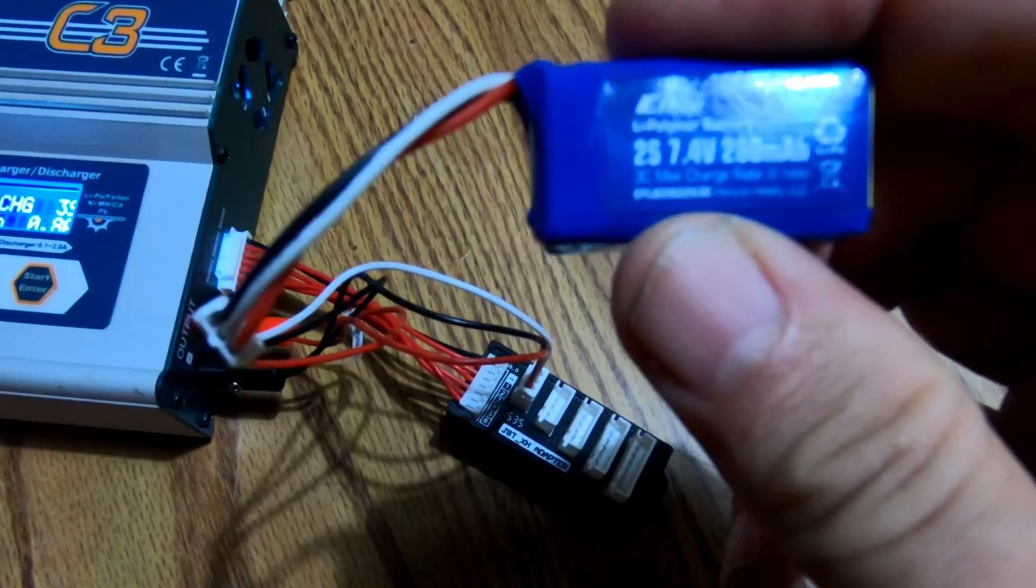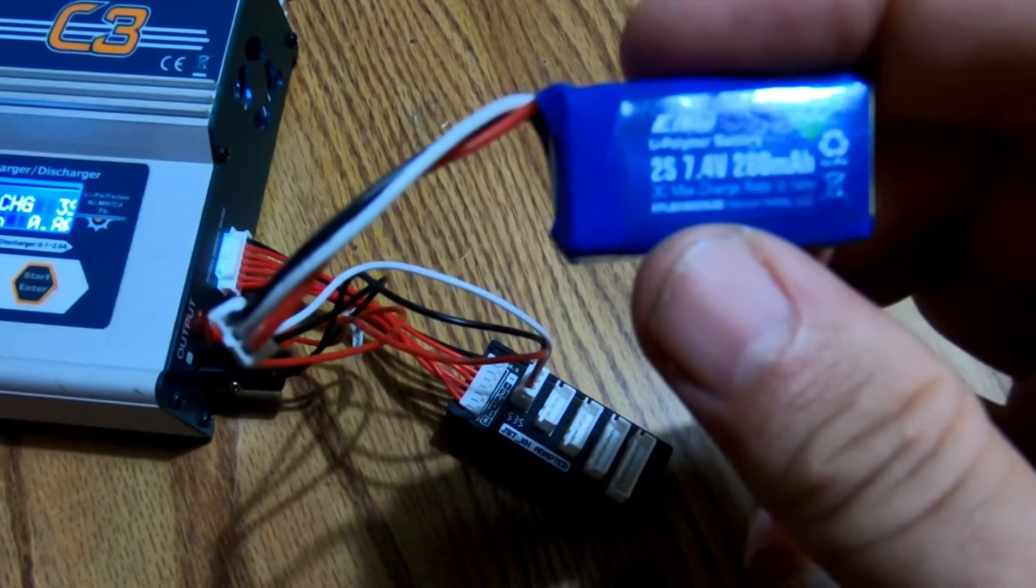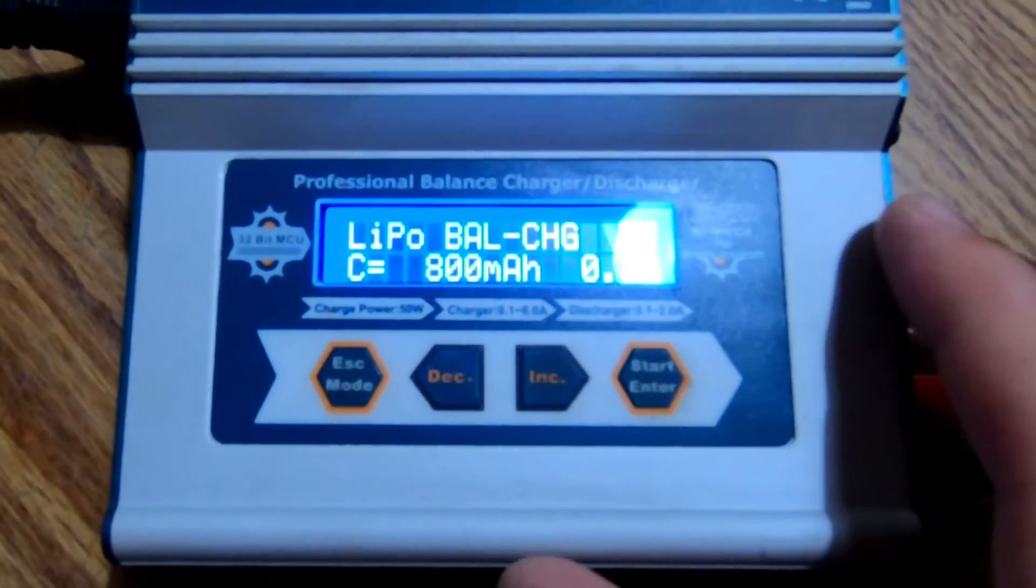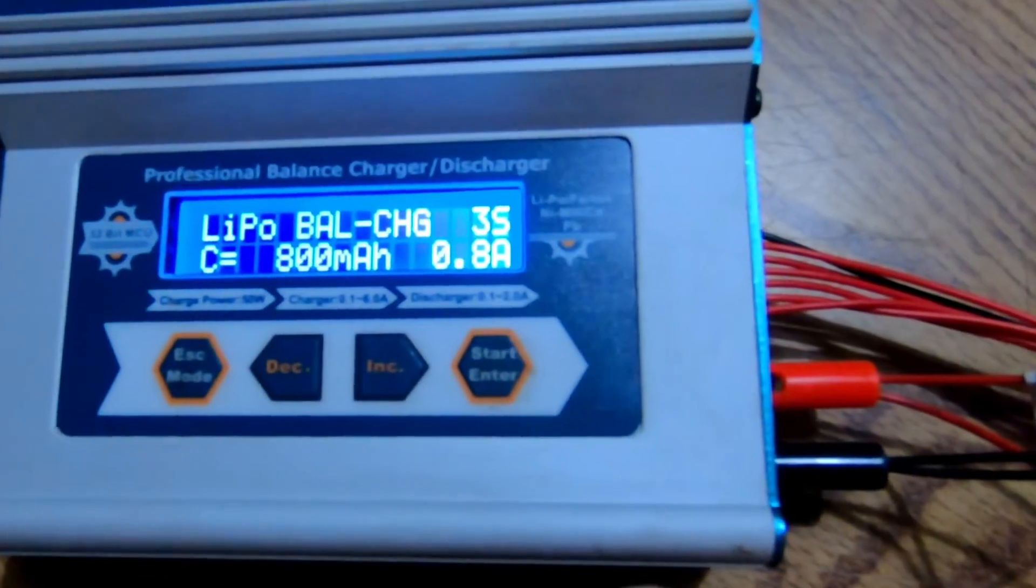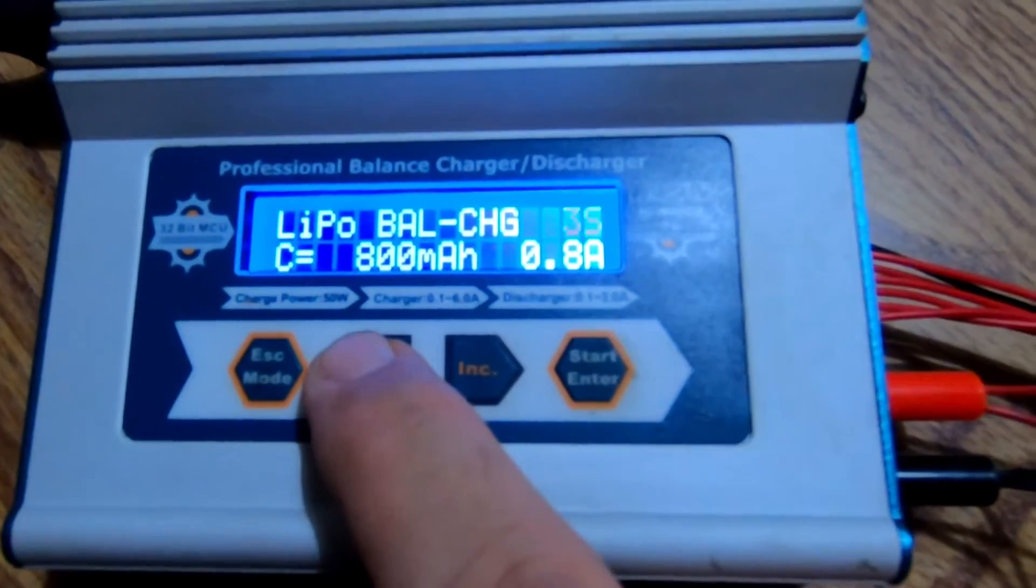And I'm going to charge this at a 2C rating, and I'll kind of explain what 2C rating means to you too. So let's go ahead and do that. I have my charger set up in the LiPo balance mode. What I'm going to need to change is I have it on three cell. So let's change the three cell to a two cell.